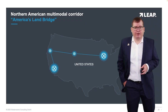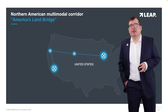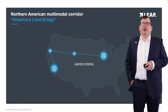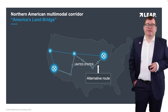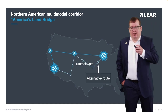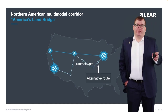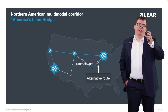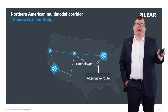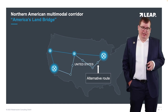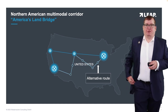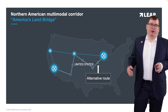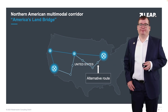One of these alternative routes went down south to Texas, then up north to Denver again, and then via Kansas City to Chicago — which actually led to just an increased on-route time.